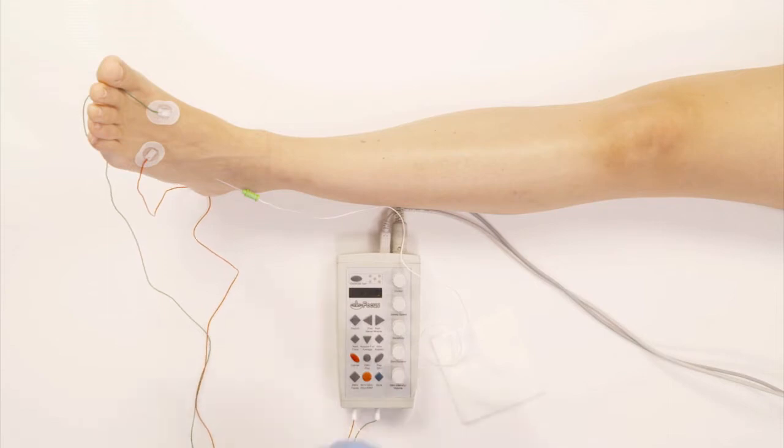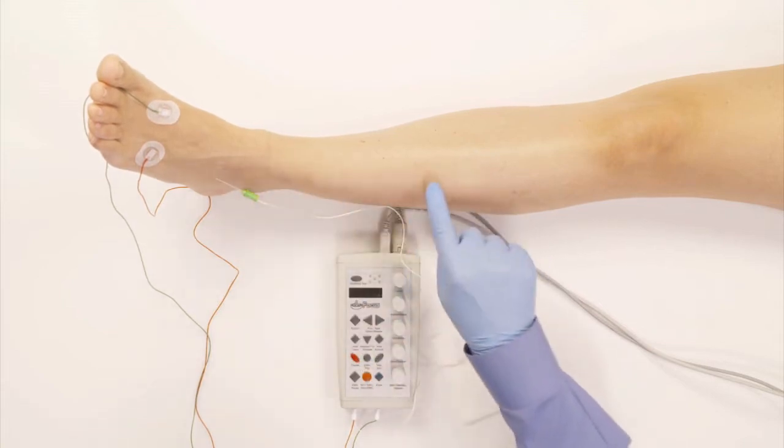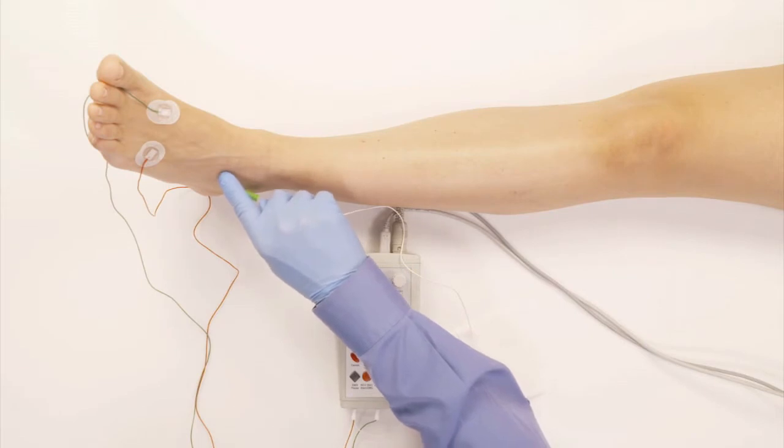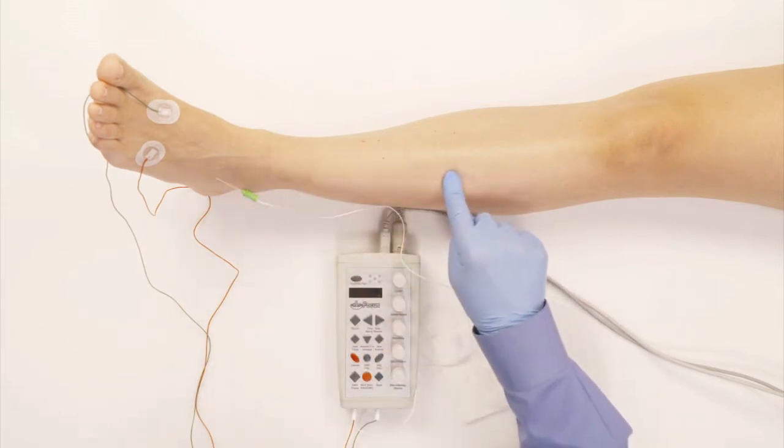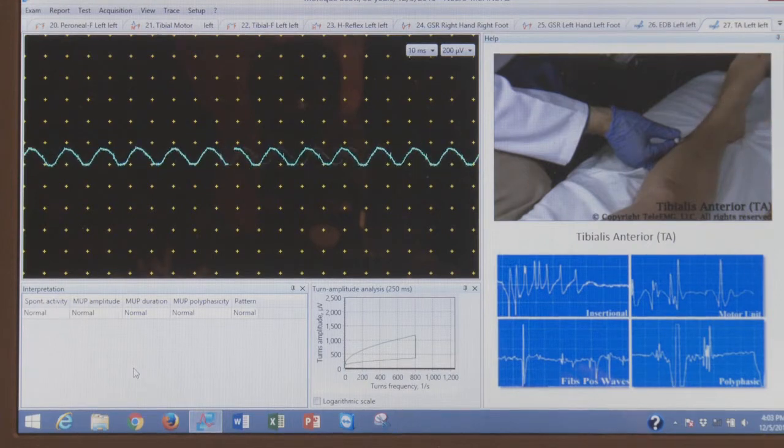The next muscle that I'm going to do is the tibialis anterior muscle, which is right here. This muscle is also innervated by the peroneal nerve. By the way, if you have low back pain and sciatica, these two muscles, the EDB and the tibialis anterior muscle, will be mostly affected. The tibialis anterior muscle is right here.